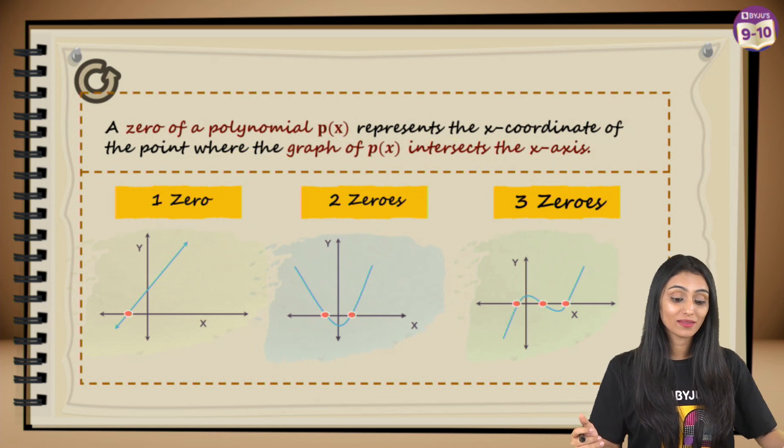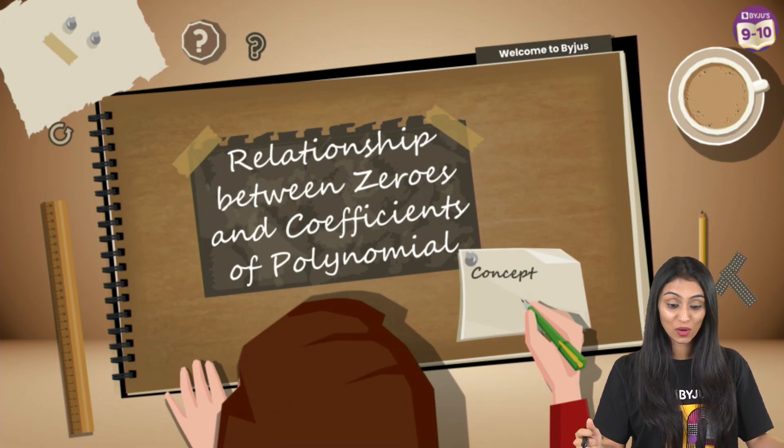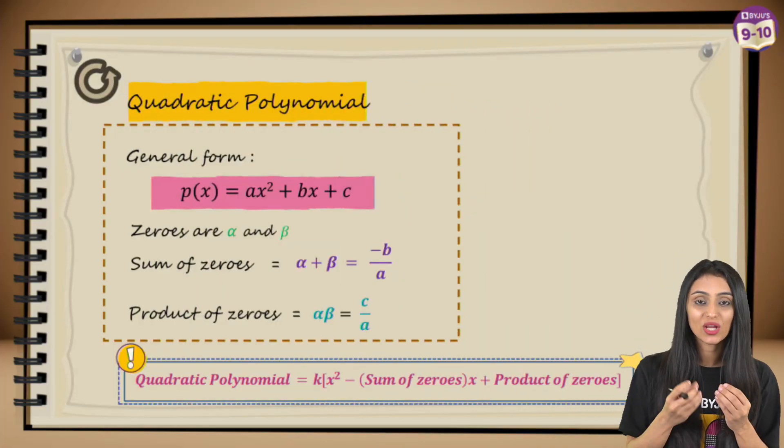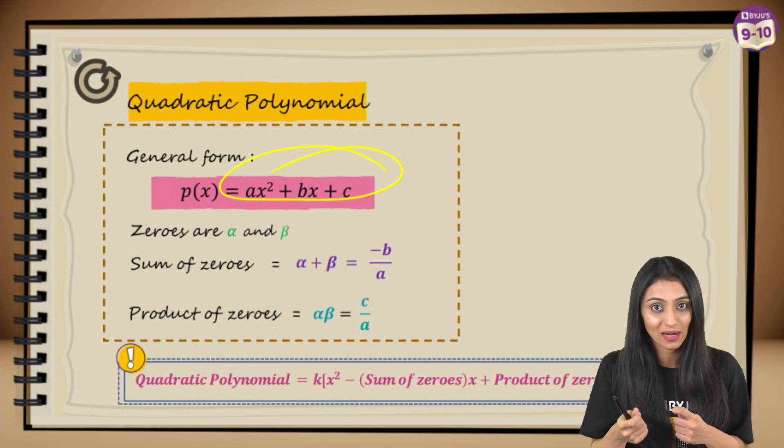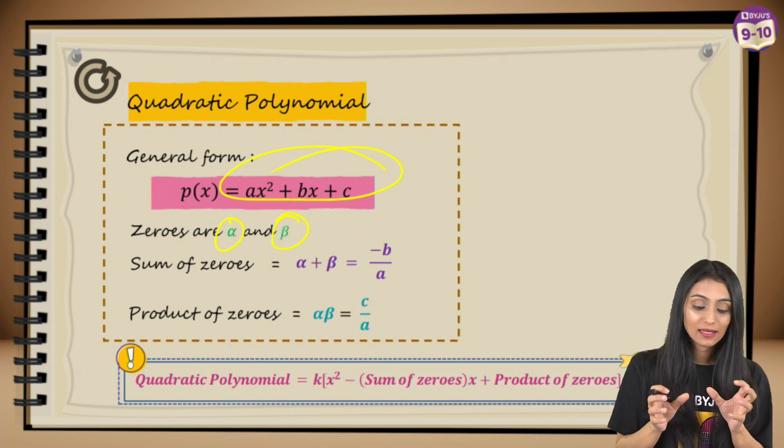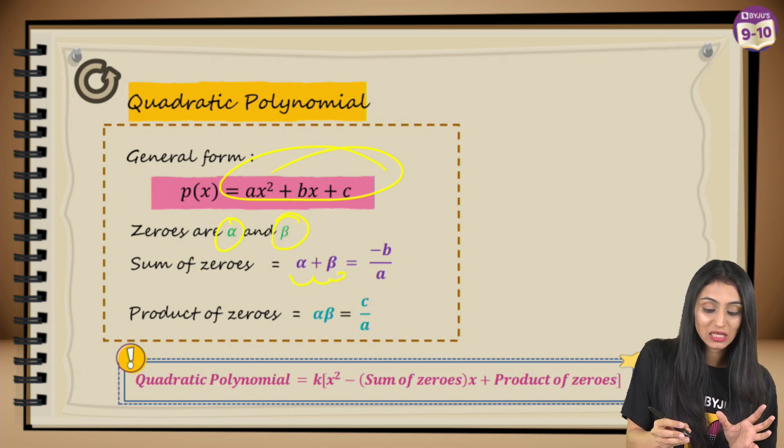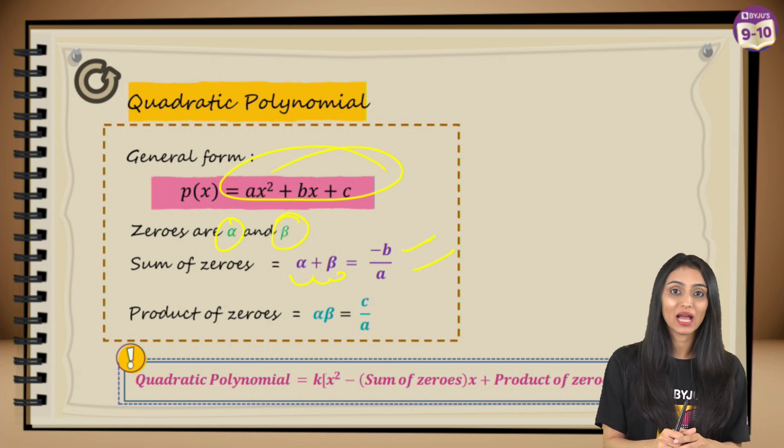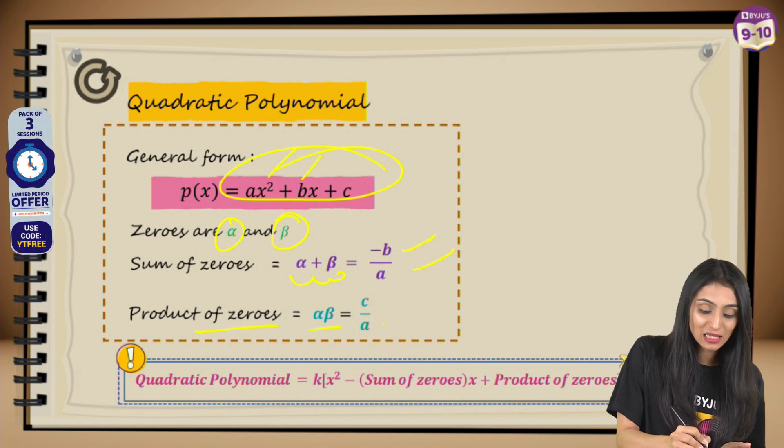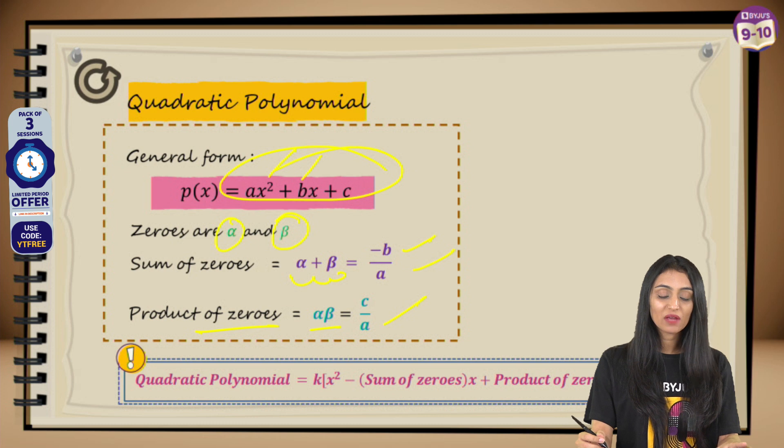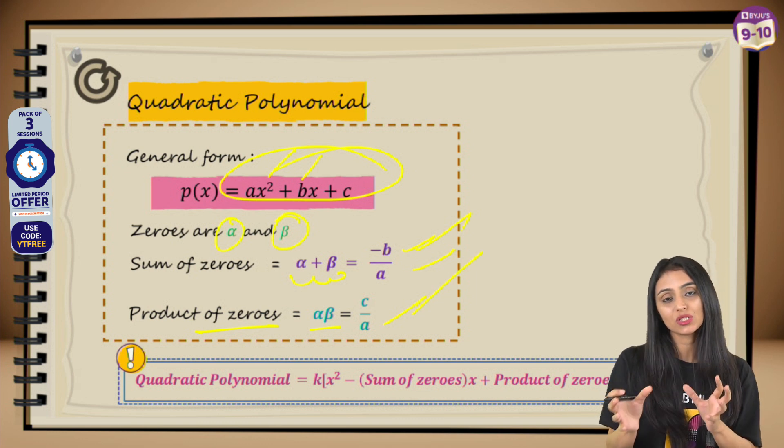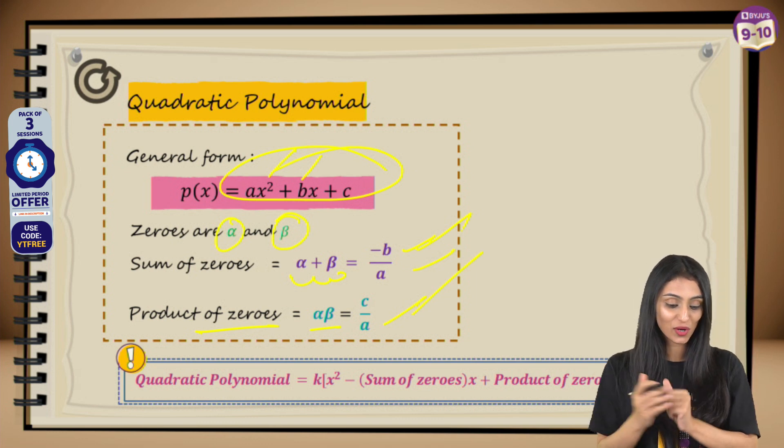Now moving to the next topic: the relationship between zeros and coefficients of a polynomial. When we have the quadratic polynomial, the general form is ax² + bx + c. Since it is quadratic, its degree is two, so it has two zeros, alpha and beta. We know that sum of zeros, alpha plus beta, equals -b/a. From where are we getting b and a? From this general form. And product of zeros, alpha beta, equals c/a. Whenever we are given any question, first we find out the zeros and then we check this relationship between the zeros and coefficients.